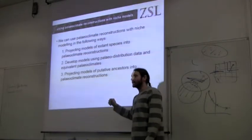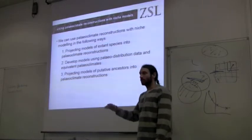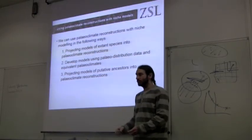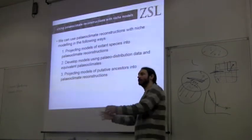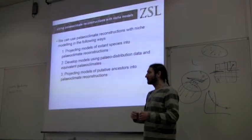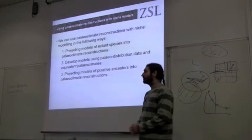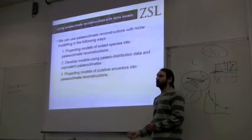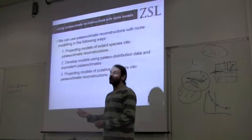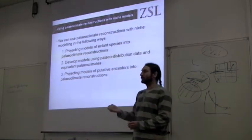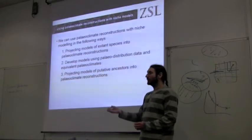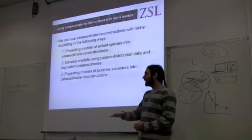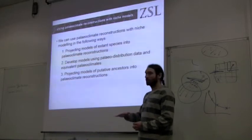The first is a direct analogue to what we were talking about yesterday — transferring forward in time — where you build your model the same way as you would for projections using present-day data, and then project into a paleoclimate reconstruction, say the last glacial maximum, and look at the predicted suitable habitat.